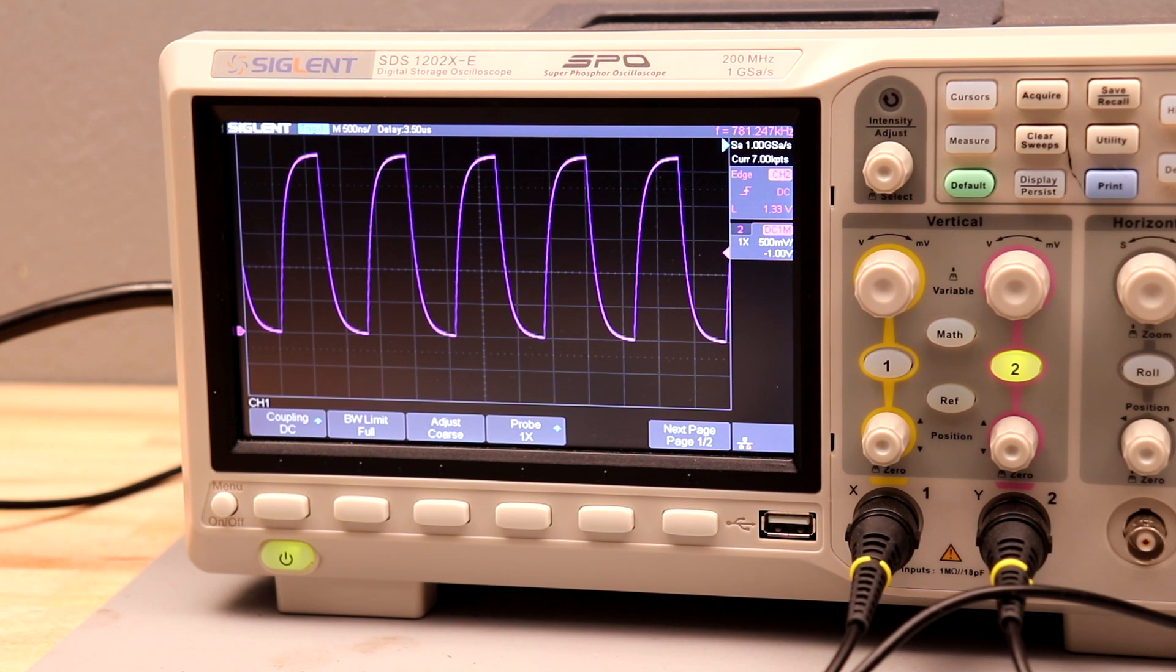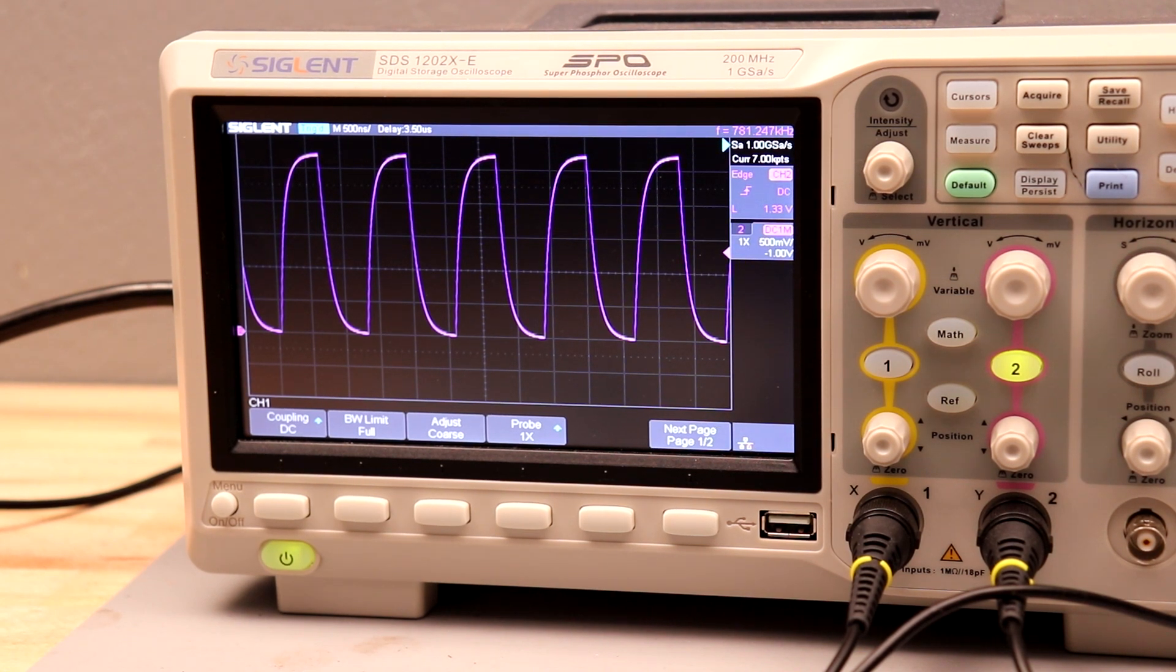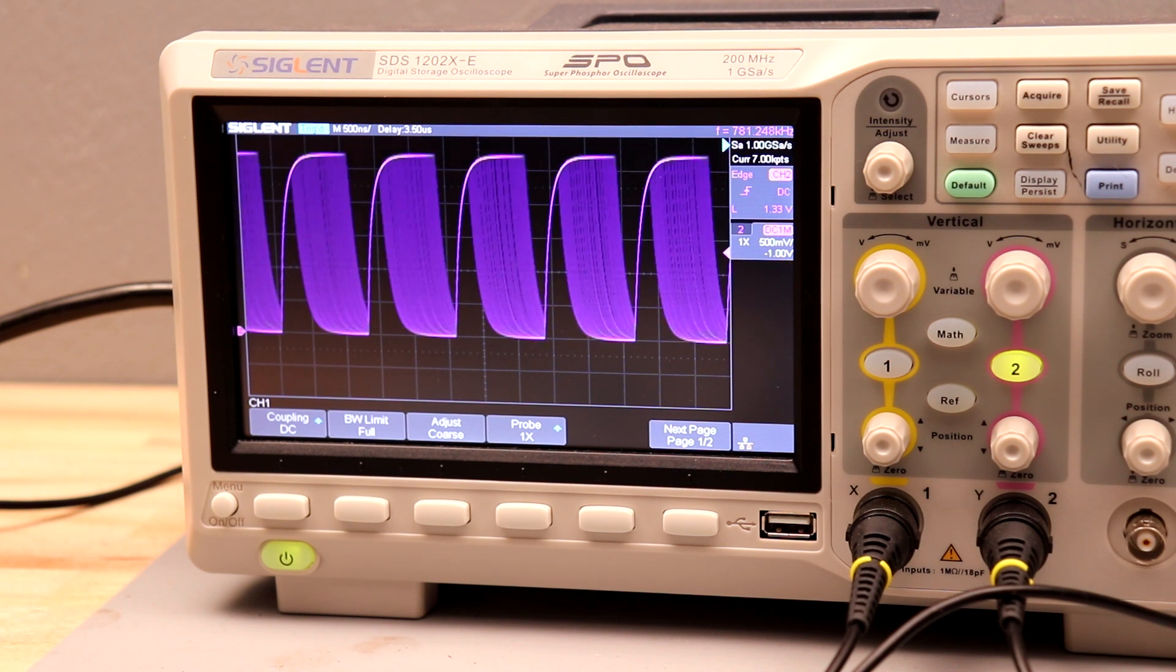And here's what that signal looks like on one of those pins. This is PWM when there isn't any audio playing. It just sits at a 50% duty cycle. And when the audio is played, here's what that looks like.